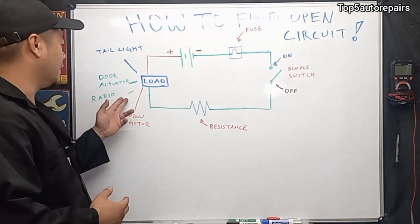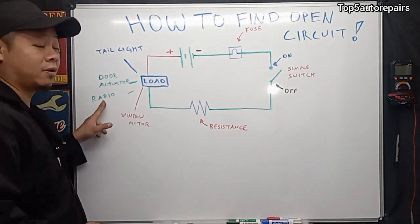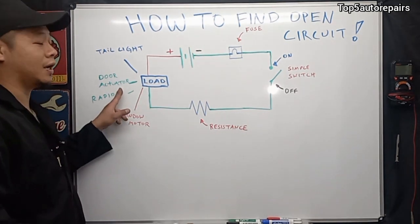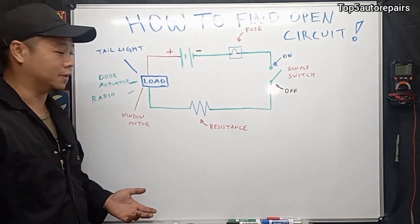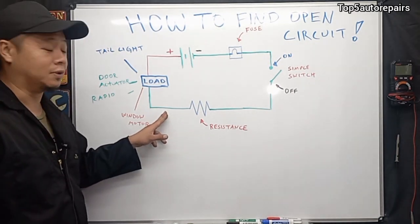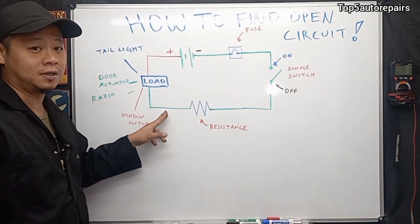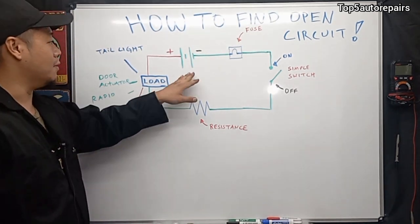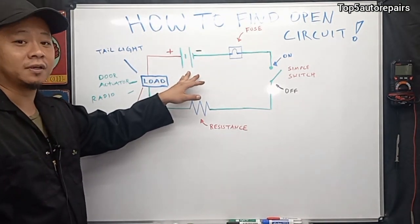A load can be anything that requires power — for example, the radio, the window motor, door actuator, tail light, headlights, and so on. A conductor can be anything; especially for a vehicle, it can be connections, it can be wires, and so on. And a power source is going to be the battery and the alternator.